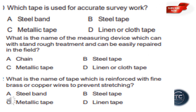Which tape is used for accurate survey work? The options are steel band, steel tape, metallic tape, and linen or cloth tape. Option A is steel band. We use this type of tape.